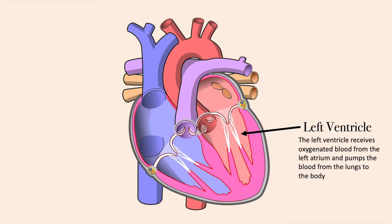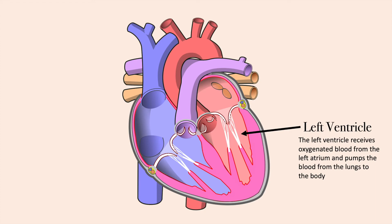The left ventricle receives oxygenated blood from the left atrium and pumps the blood from the lungs to the body. The right ventricle pumps deoxygenated blood to the lungs through the pulmonary valve.